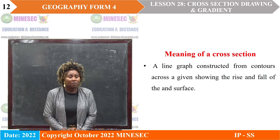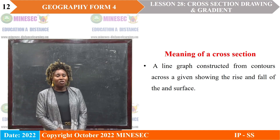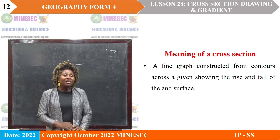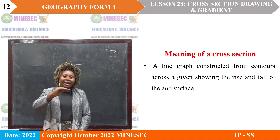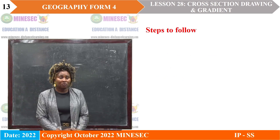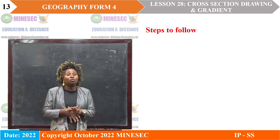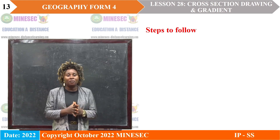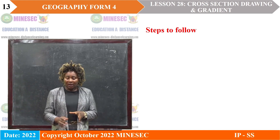The meaning of a cross section: a cross section is a line graph constructed from contours across a given point, showing the rise and fall of the land — the highlands and the lowlands. There are a number of steps to follow in order to draw a cross section. Remember, a cross section is a line graph showing the rise and fall of the land.